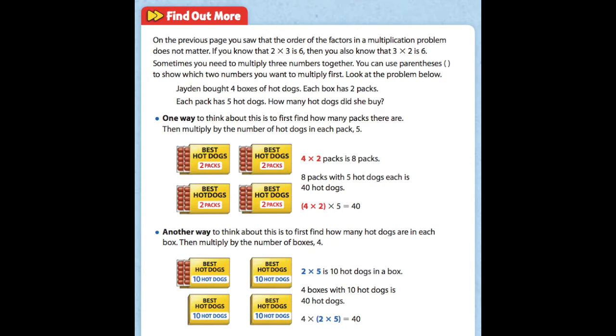We can also do it another way. Let's look at that bottom picture now. Another way to think about this is to first find out how many hot dogs there are in each box. Then you would multiply by the number of boxes, which is 4. So we know that in one box we have 2 packs of hot dogs, and each pack has 5 hot dogs in it. So we would start off by doing 2 times 5, which we know is 10 because the double of 5 is 10.